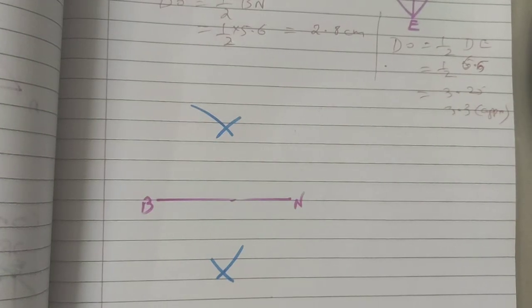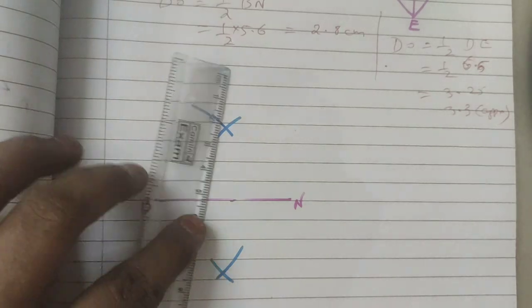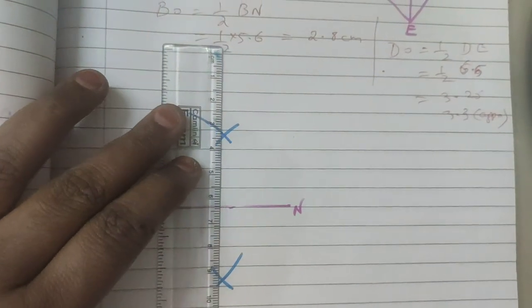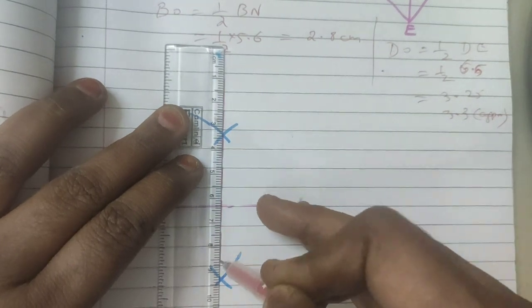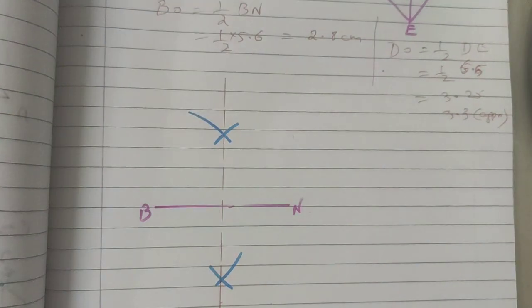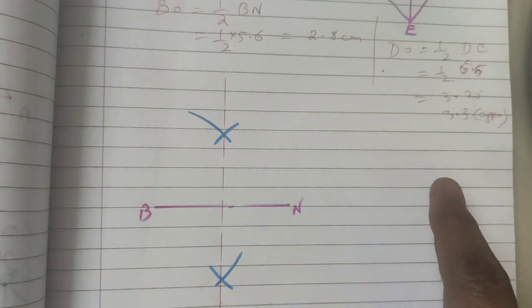So now you got the two arcs. So join with the dotted lines. This is the center perpendicular line.